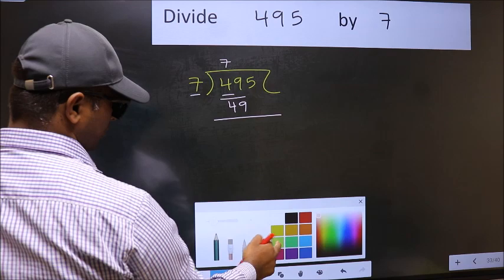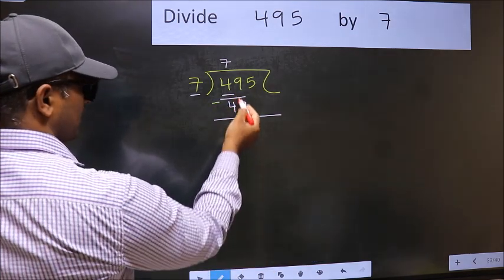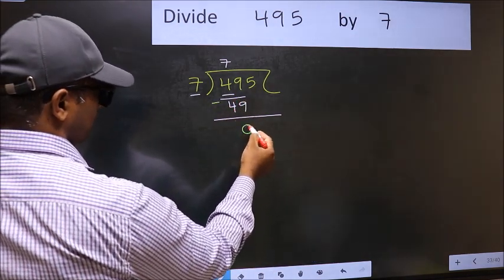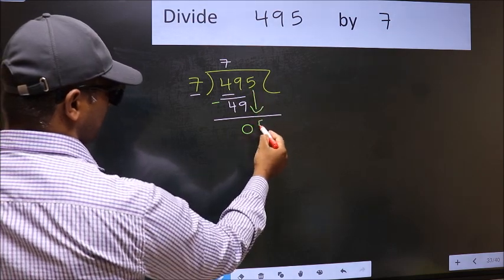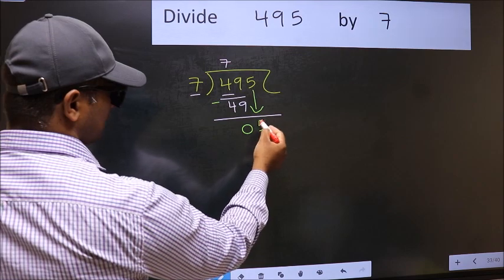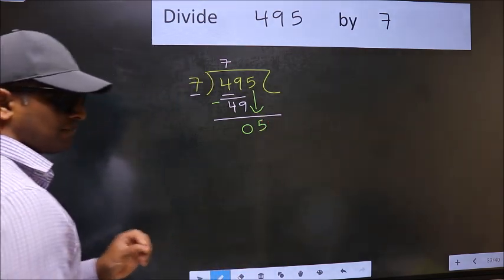Now you should subtract. 49 minus 49, 0. After this, bring down the beside number. So 5 down. After this step, the mistake happens.